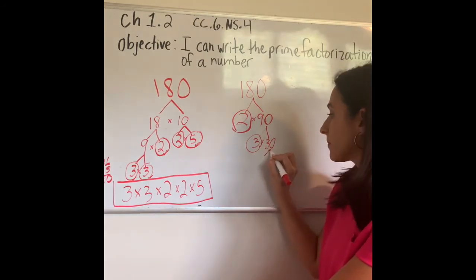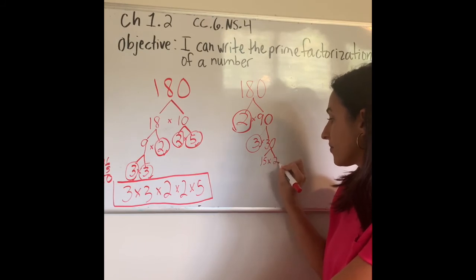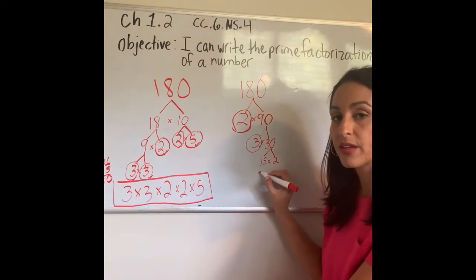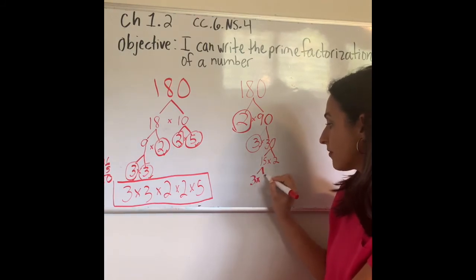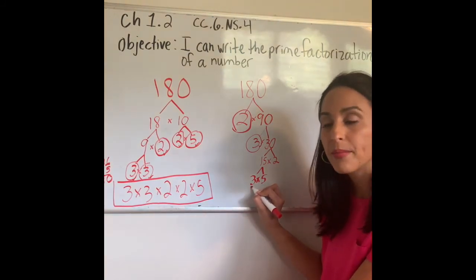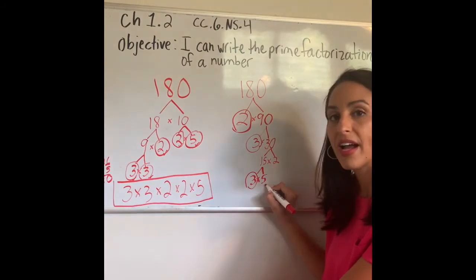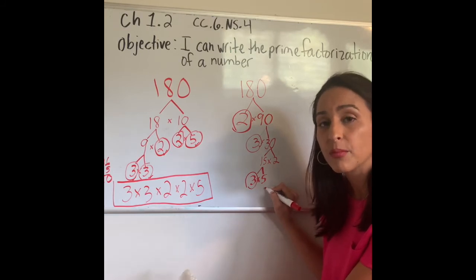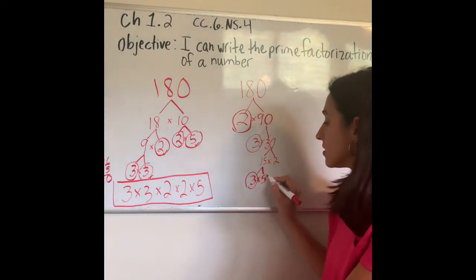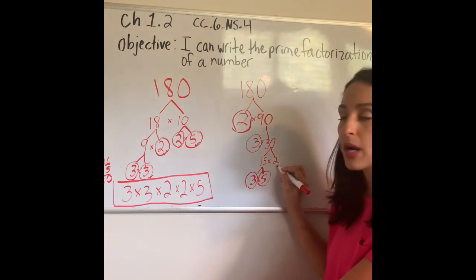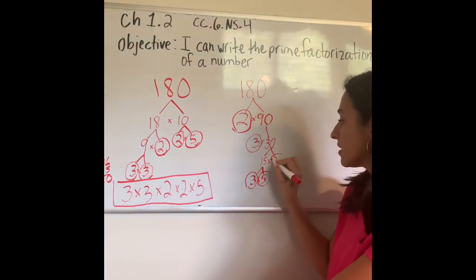Move to my right — 30. I can break it down. 15 times 2 gives me 30. Stay on my left — 15. Can we break it down? Yes. Three times five gives me 15. Stick to my left — 3. Three is prime, so I circle it. What about 5? It's also prime — only 5 times 1 or 1 times 5. So circle it. Let's move to our right — the 2. Two is prime — we learned that from the previous problem. So I circle it.